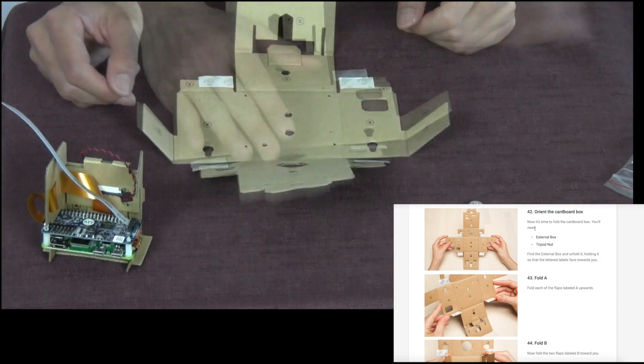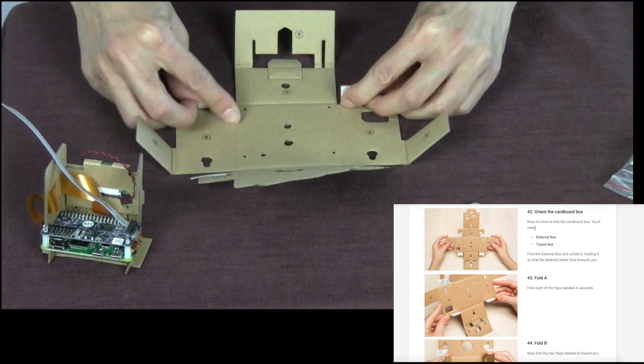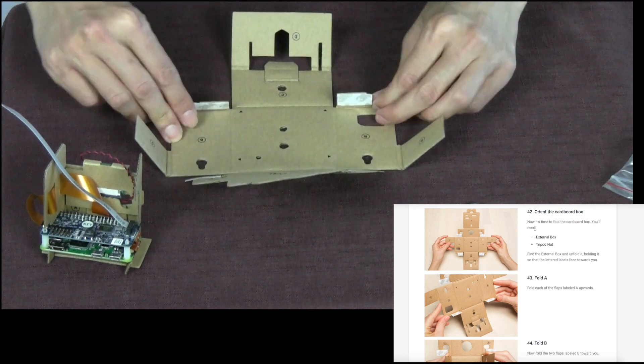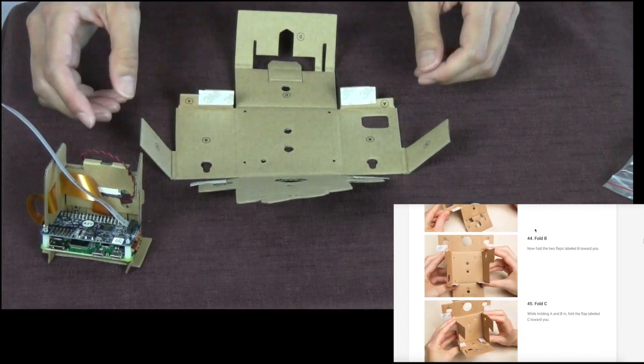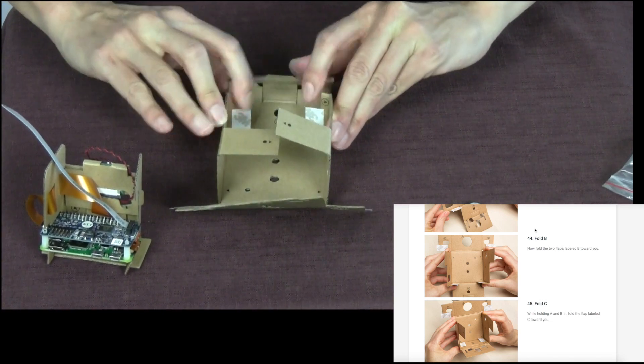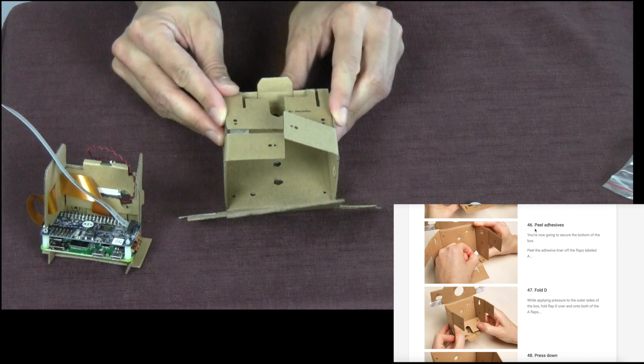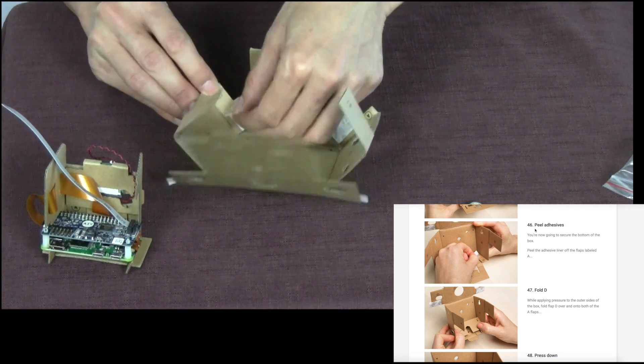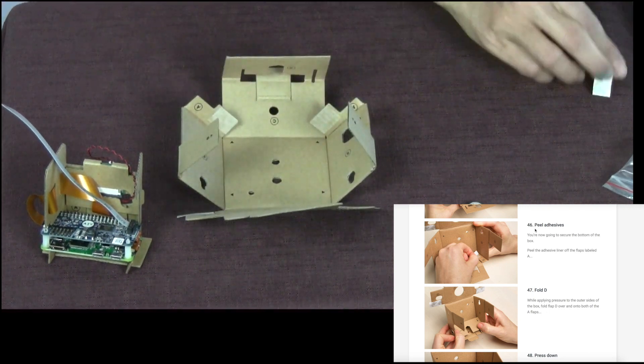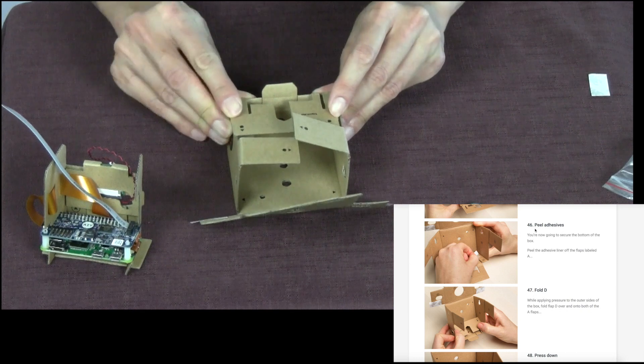Now we're ready to build the outside box. Here is the box. This is just like folding a box. And they said start with the letter A. Started with the letter A, folded that up. Now fold up B. Now fold C. While holding A and B in, fold the C towards you. And then peel the adhesives on flaps labeled A. Fold D onto both of the A flaps.